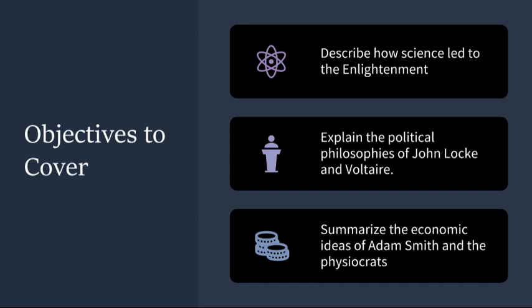To understand the Enlightenment, we must first explore how science played a pivotal role in its development. Science and the Enlightenment were deeply intertwined. In the preceding centuries, the scientific revolution had set the stage by fostering a spirit of inquiry and empiricism. Thinkers like Galileo, Copernicus, and Newton challenged traditional beliefs, encouraging a shift towards a more rational understanding of the world. This new approach to knowledge was central to Enlightenment thinking.